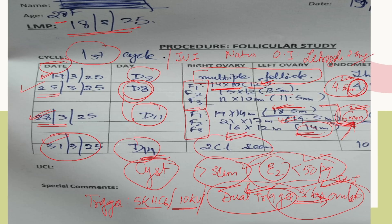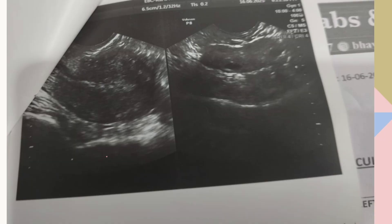2 corpus luteums were seen on Day 14. This is important because from Day 14 you will start giving the patient progesterone, or luteal phase support. This is very important.